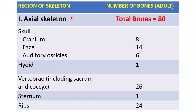Here you can see the axial skeleton. There are 80 bones out of a total of 206 bones in the body. The axial skeleton includes the skull — the cranium (8 bones), the face (14 bones), the auditory or ear ossicles (6), the hyoid bone (1), the vertebrae including sacrum and coccyx (26), sternum (1), and ribs — 12 pairs totaling 24 in number.